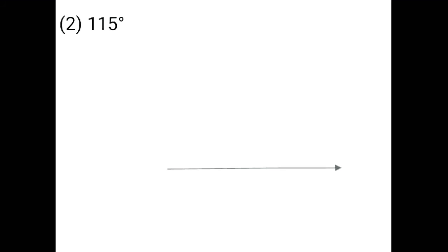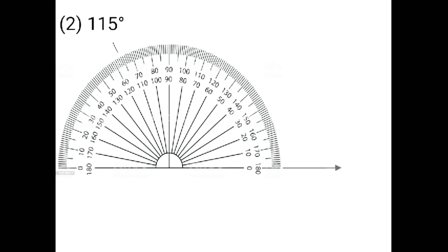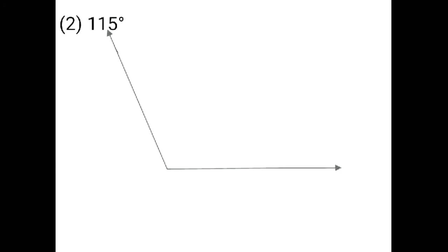Next, 115 degree. Draw the bottom ray in a horizontal way. Place your protractor on the starting point of the ray and mark 115 degree. 115 degree is here, between 110 and 120. 115 degree where I circled, there I have drawn a small black line. The protractor where you placed on the starting point of the ray and 115 degree where you marked, there you have to draw the ray like this. 115 degree is more than 90 degree — 115 degree is an obtuse angle. Now you have to give the name of this angle: angle LMN.